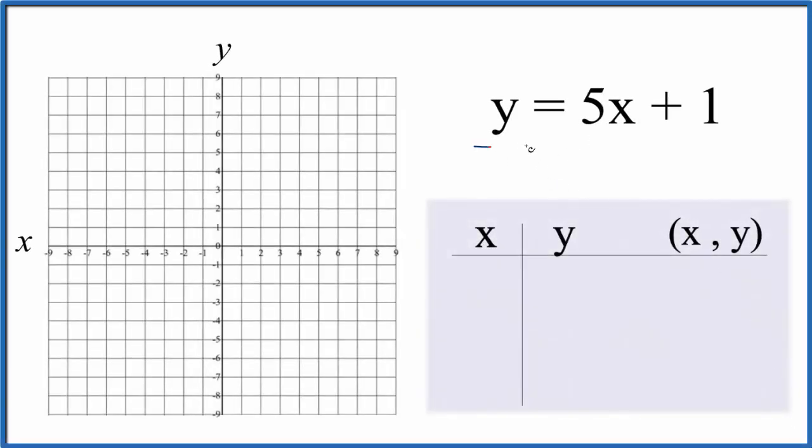Let's graph the linear equation y equals 5x plus 1. We'll do this two ways. First we'll put values in for x and get the corresponding y value and we can graph that point. Next we'll check our work with the slope-intercept formula.